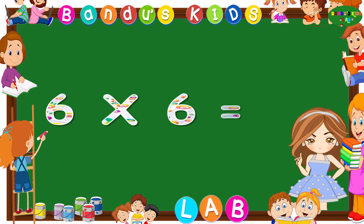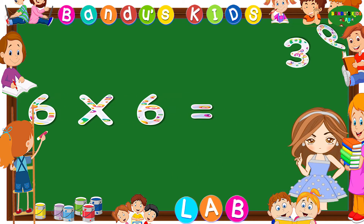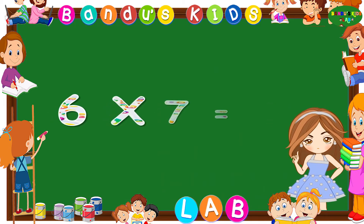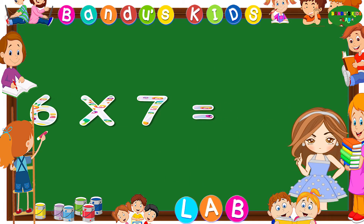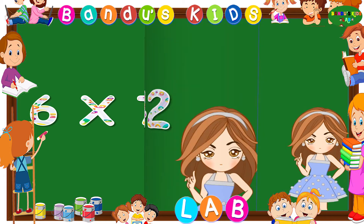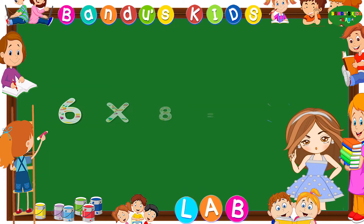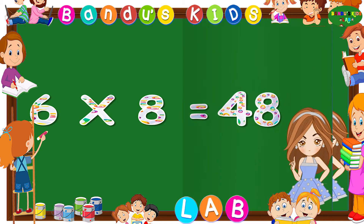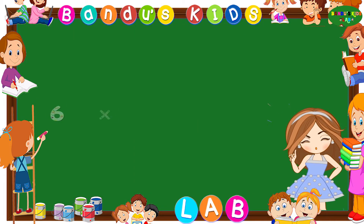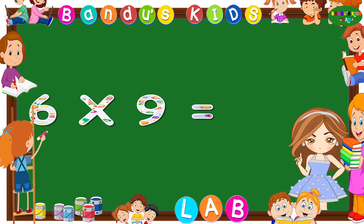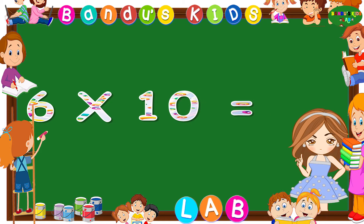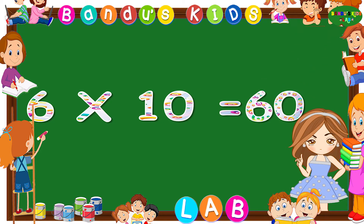Six sixes are thirty-six. Six sevens are forty-two. Six eights are forty-eight. Six nines are fifty-four. Six tens are sixty.